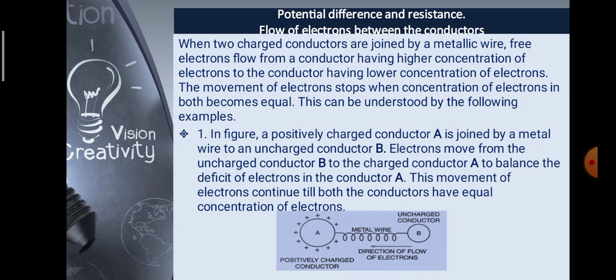What is potential difference in resistance? We shall see the flow of electrons between conductors. When two charged conductors are joined by a metallic wire, free electrons flow from a conductor having higher concentration of electrons to the conductor having lower concentration of electrons. The movement of electrons stops when the concentration of electrons in both becomes equal. In the figure, a positively charged conductor A is joined by a metal wire to an uncharged conductor B. Electrons move from the uncharged conductor B to the charged conductor A to balance the deficit of electrons in conductor A. This movement continues till both conductors have equal concentration of electrons.